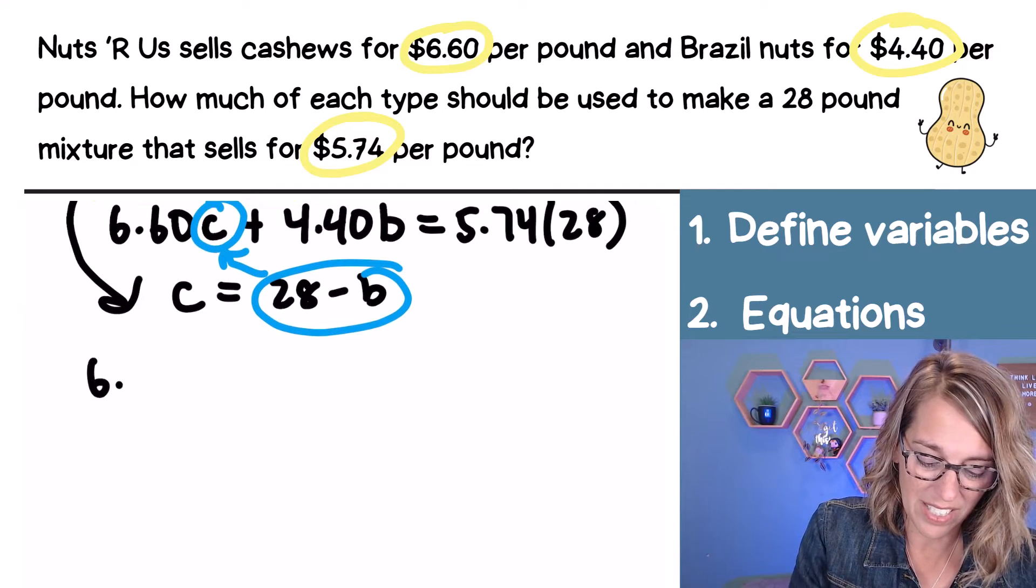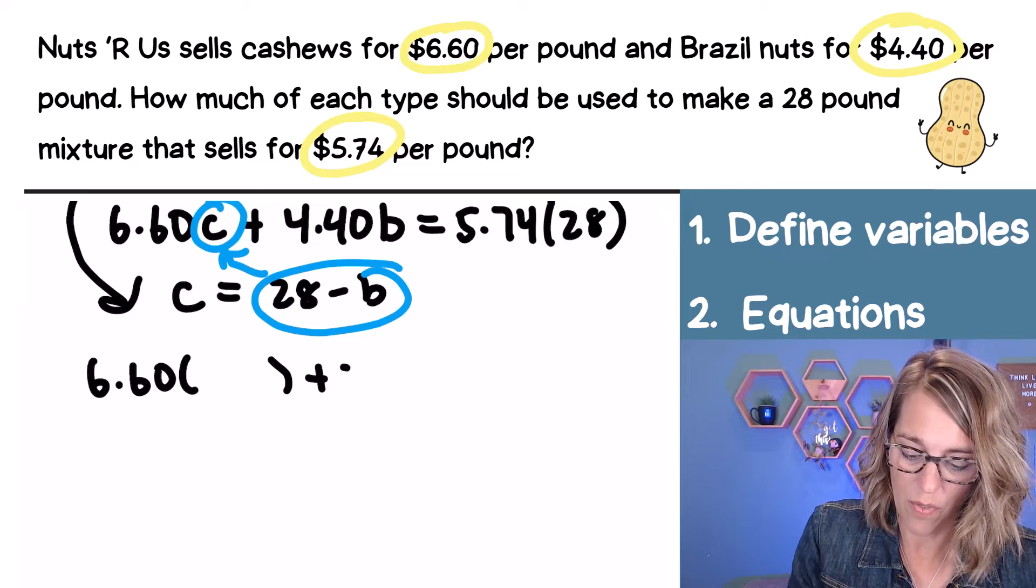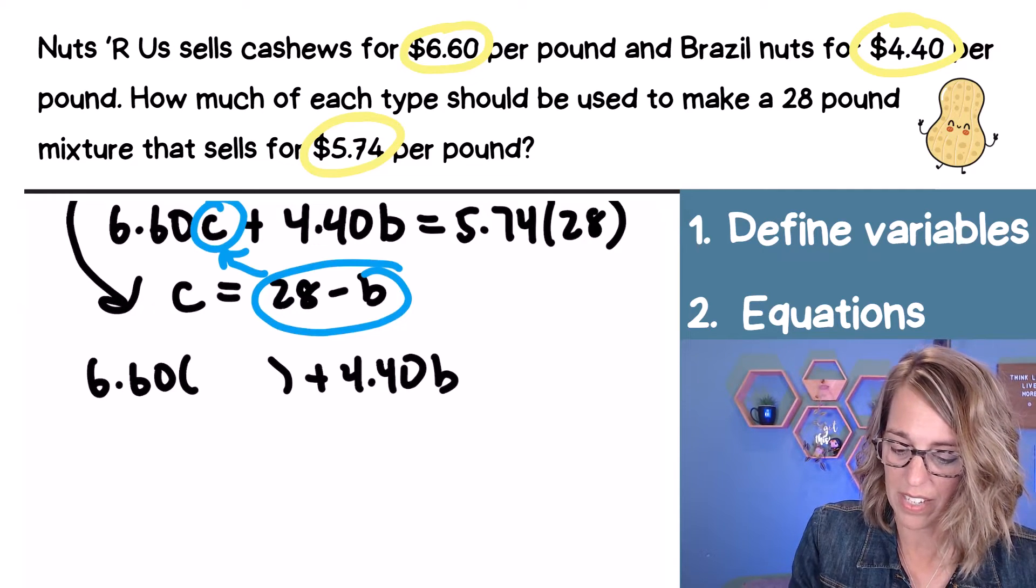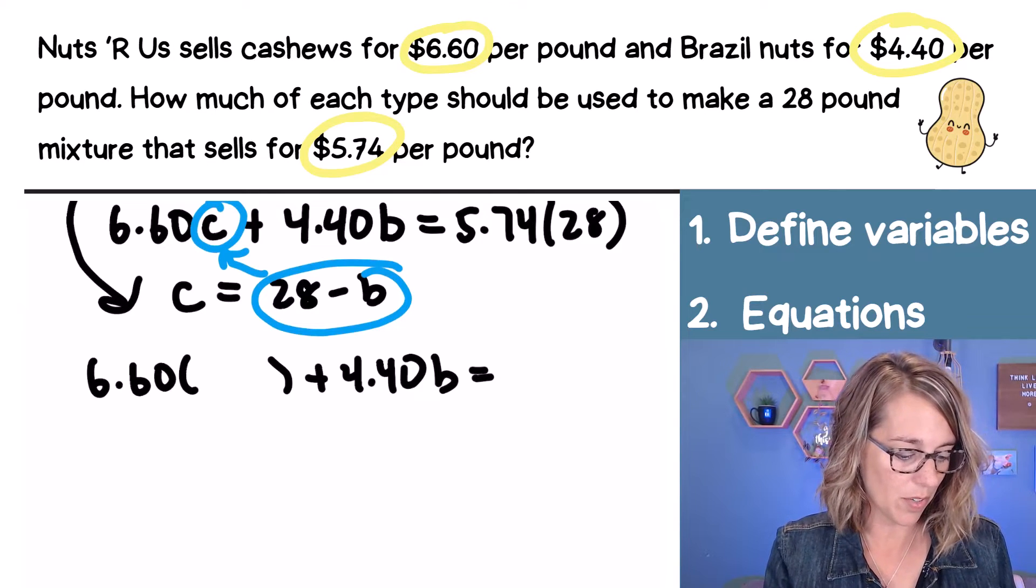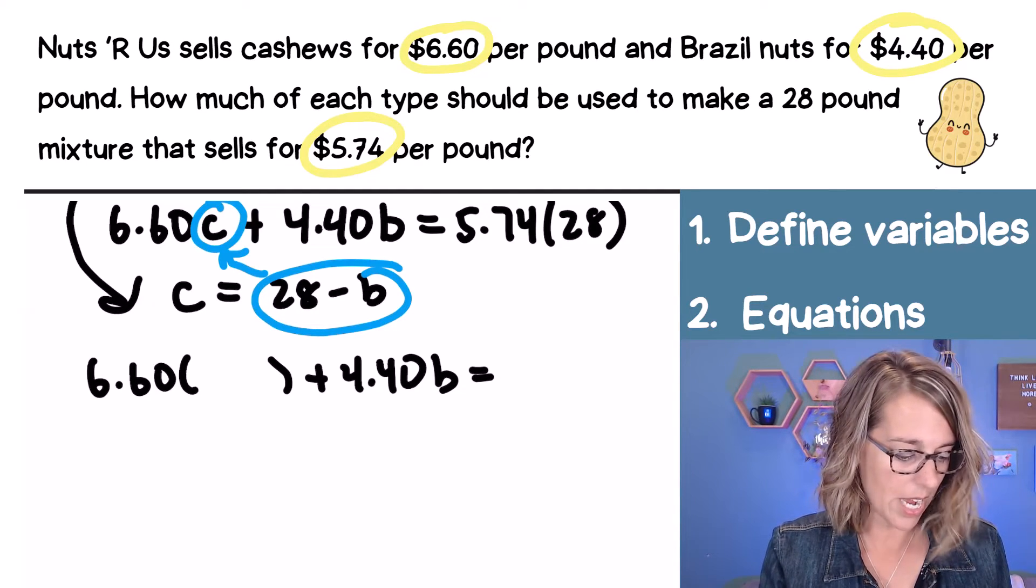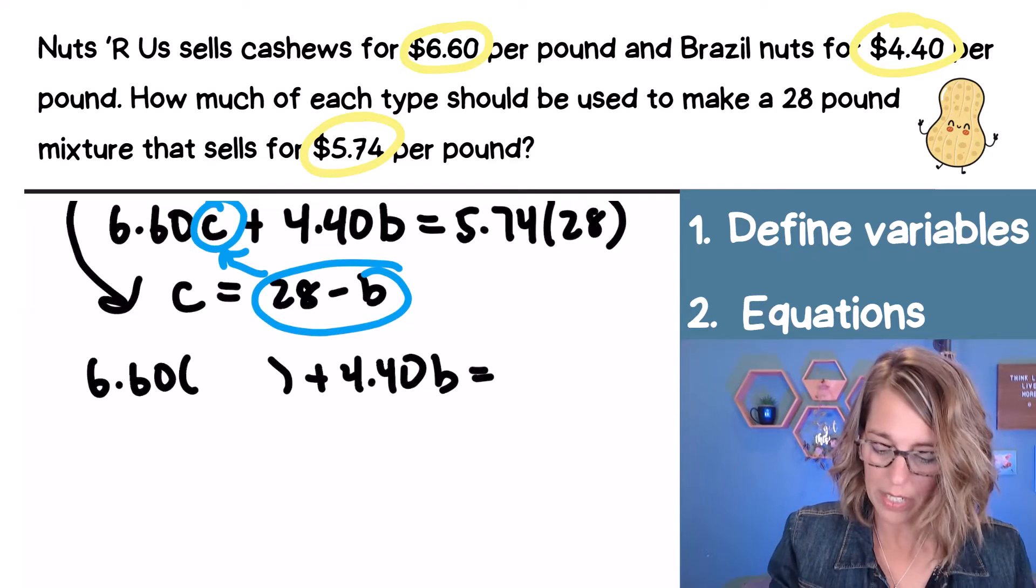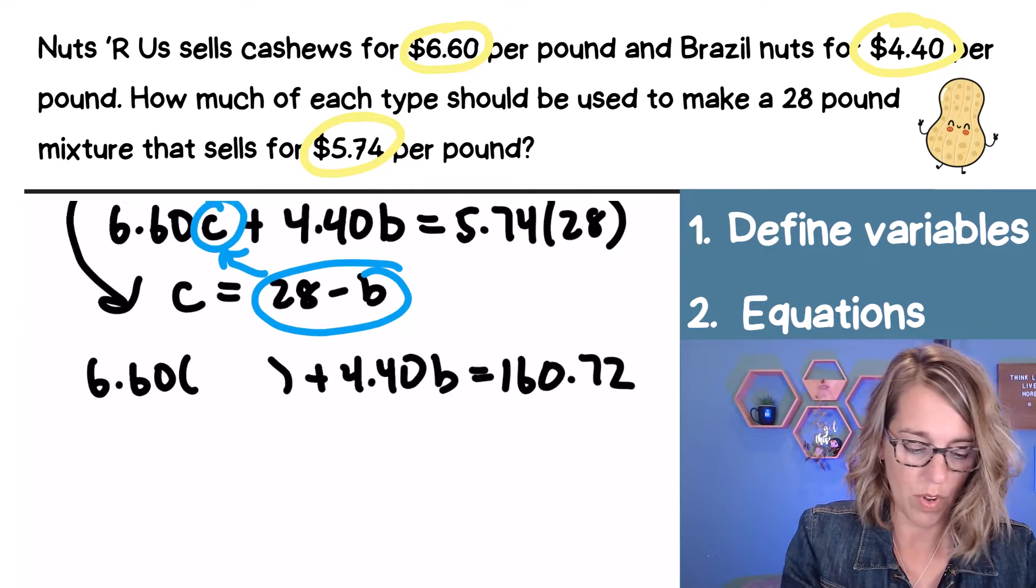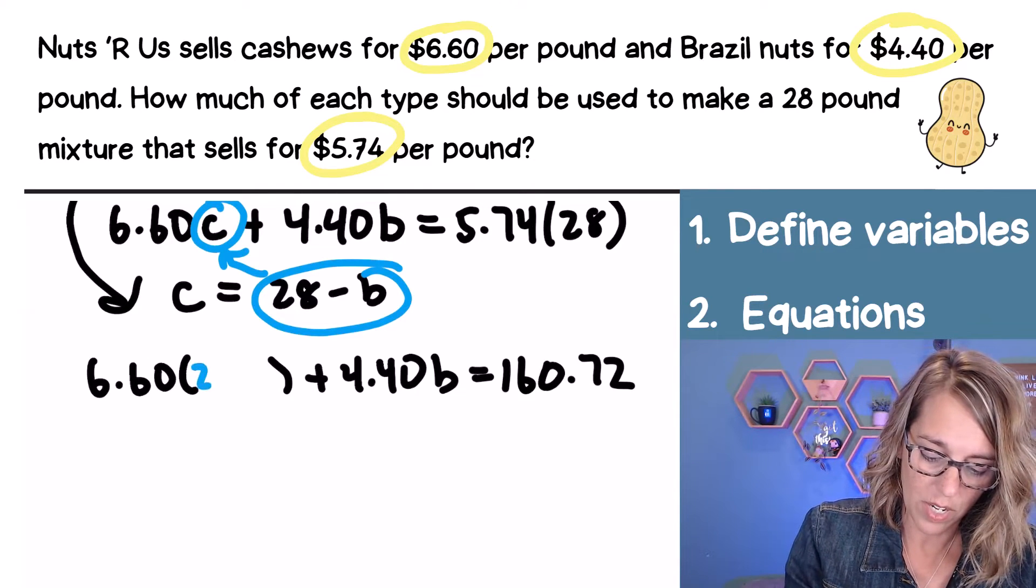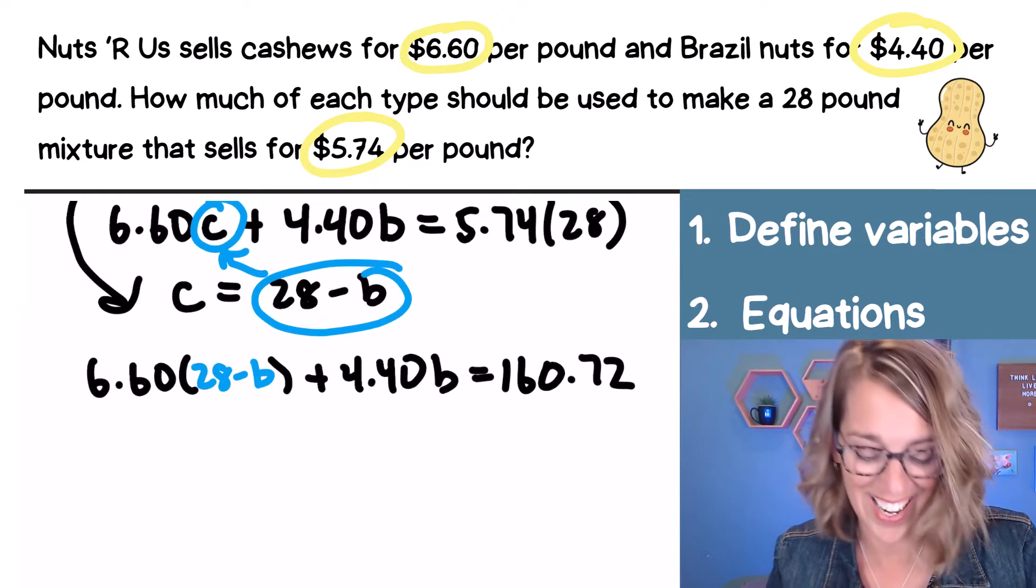So I've got 660 times C plus 440B is equal to, I've got my calculator over here on the side. I'm just going to do 5.74 times 28. And you should get 160.72. And that 28 minus B goes right there inside the parentheses.